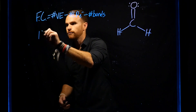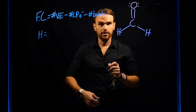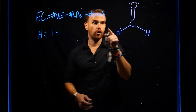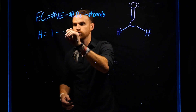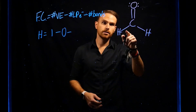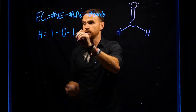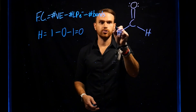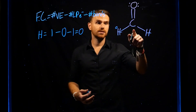Starting with hydrogen: the number of valence electrons for hydrogen is one. There are no lone pairs around hydrogen in this structure, and there is one bond between carbon and hydrogen. This means one minus one is equal to zero, so hydrogen has a formal charge of zero.